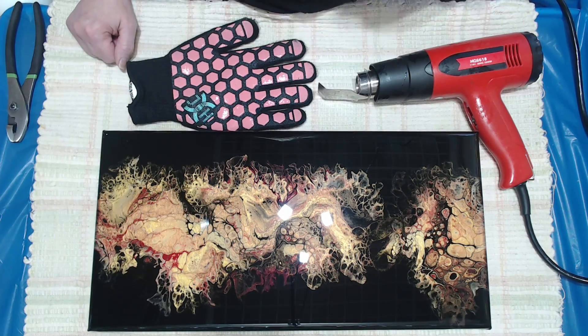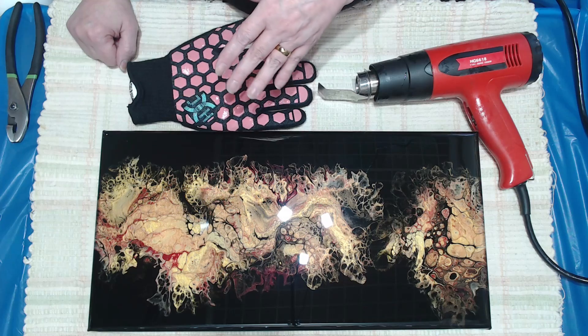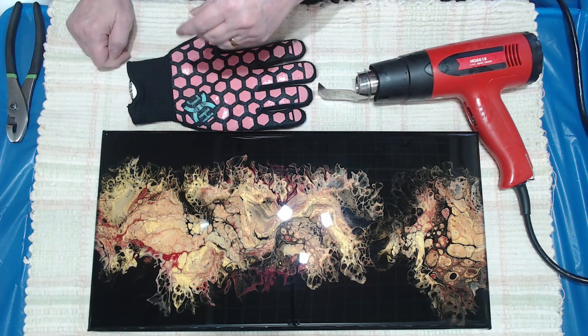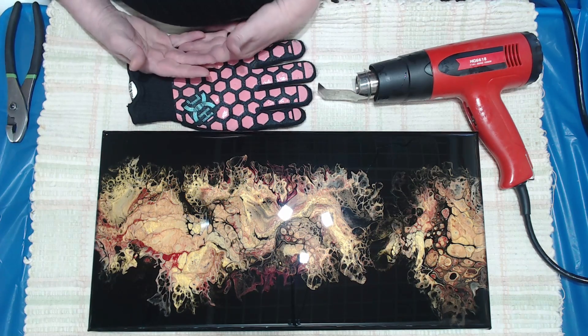Hey everyone, so probably the most asked question that I get is how do you remove the resin drips from your paintings.